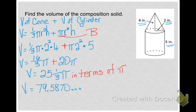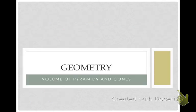But if I didn't want to answer in terms of pi, I wanted a number, I would multiply that by pi, get a repeating decimal, and round it to 79.59 inches cubed. So, now you have the formulas and some examples for volumes of pyramids and cones, you can do your homework.